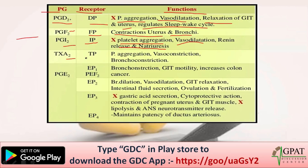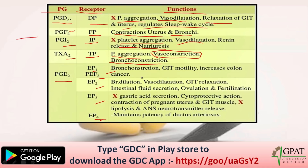TXA2 acts on receptor TP; its functions are platelet aggregation, vasoconstriction — which is what the question asks — and bronchoconstriction. PGE2 acts on receptors EP1, EP2, EP3, and EP4, with functions including bronchoconstriction, increased GIT motility, increased colon cancer risk, bronchodilation, vasodilation, GIT relaxation, and intestinal fluid secretion. The correct answer is TXA2, option C.